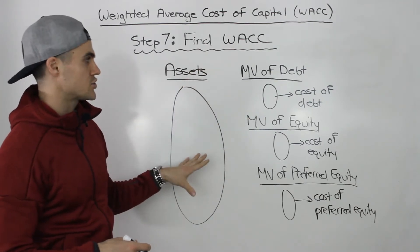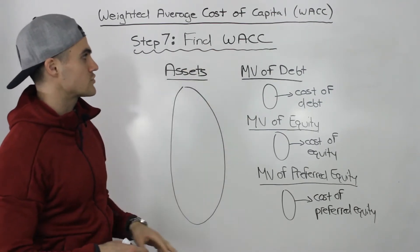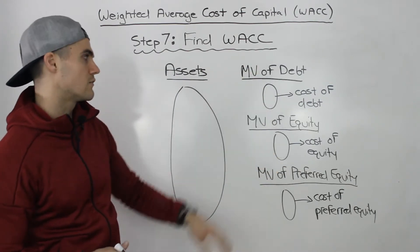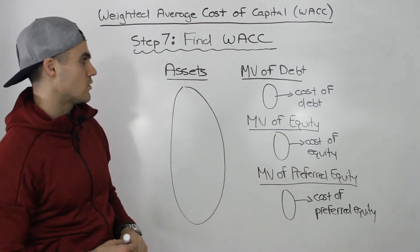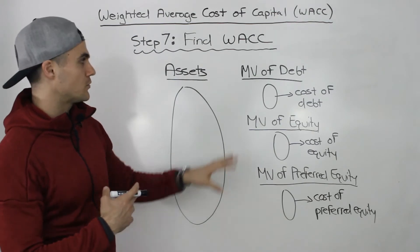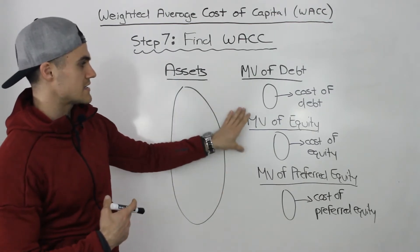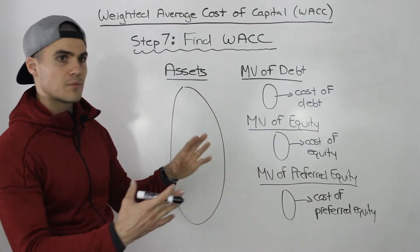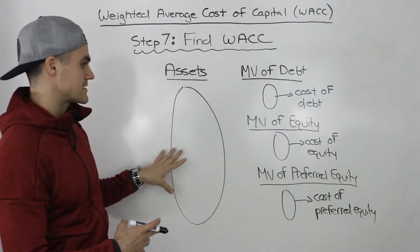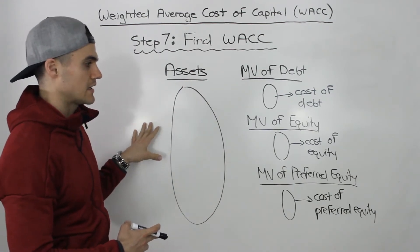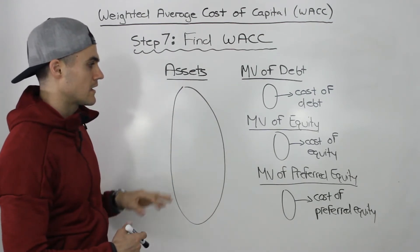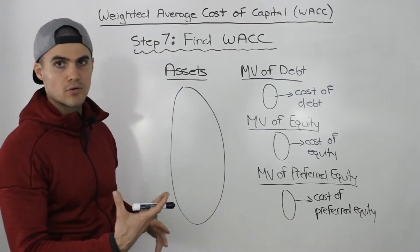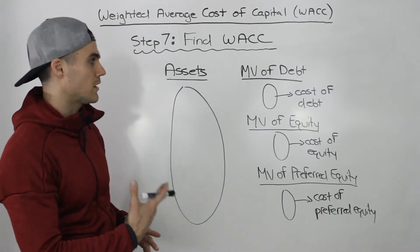This here represents a balance sheet. When we're finding the weighted average cost of capital, we're working with the right side of the balance sheet. So when we receive capital, we take on some debt, take on some equity, take on some preferred equity, then we take that capital, we buy assets, and then our assets make us income. And then we have to pay a return to the people that we took money from.